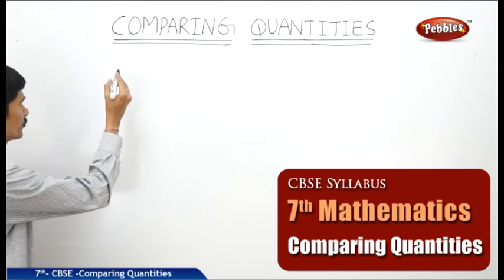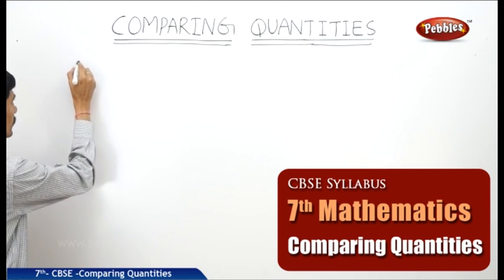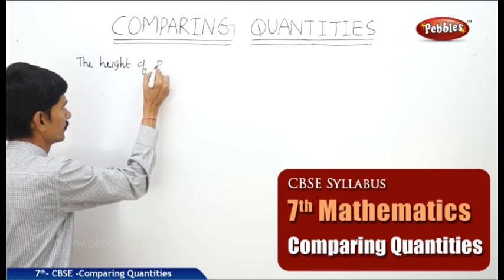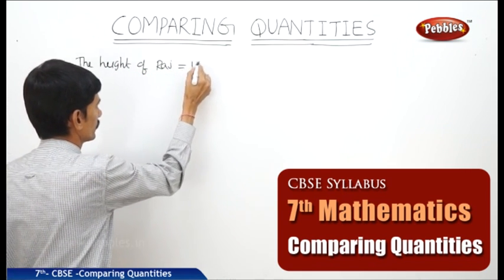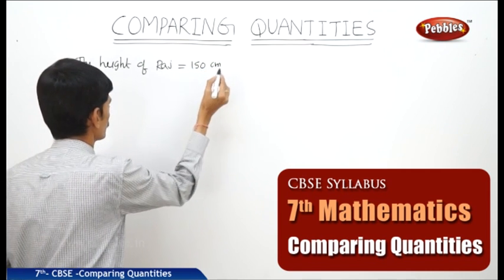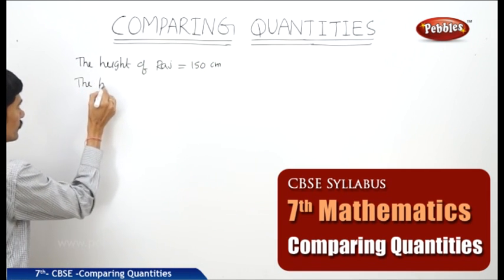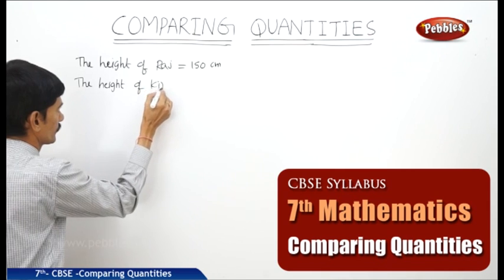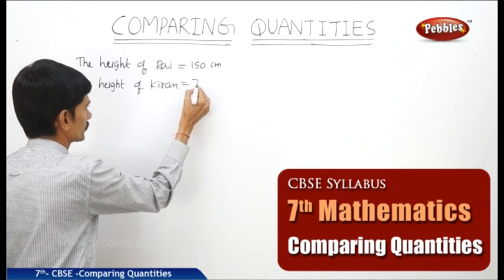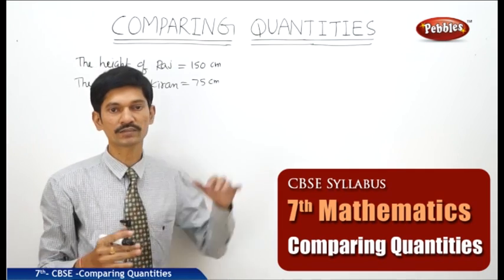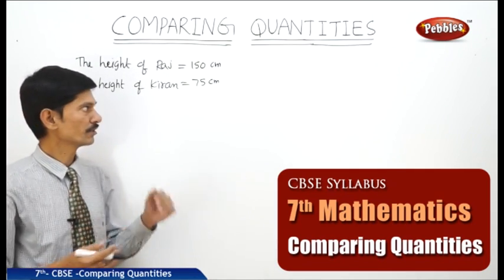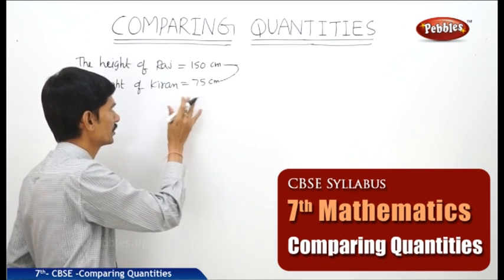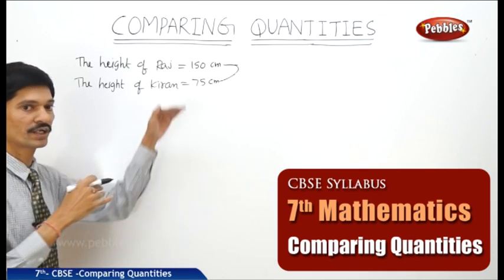Let us consider the heights of two persons. The height of Raj equals 150 centimeters and the height of Kiran equals 75 centimeters. How do we compare the heights of these two persons, Raj and Kiran? We can observe that the height of Raj is two times the height of Kiran, and the height of Kiran is half the height of Raj.